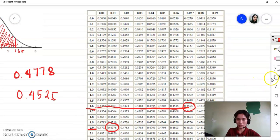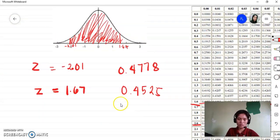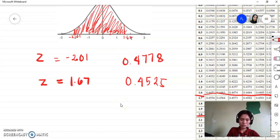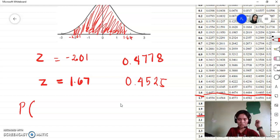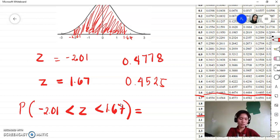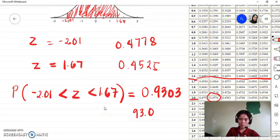Okay, correct. So we just add these two areas. That means the probability that Z is between negative 2.01 and 1.67. With your calculator, 0.4778 plus 0.4525 is 0.9303. You're going to multiply it by 100%, so that's 93.03 percent. So that is now the area.